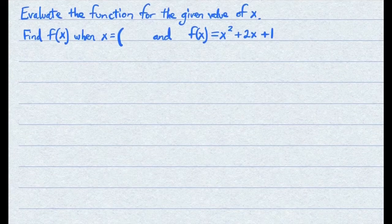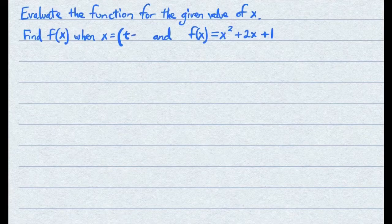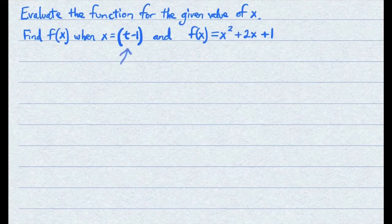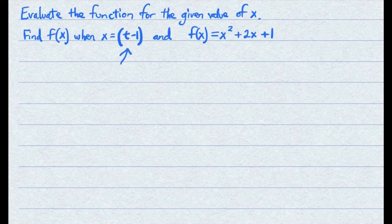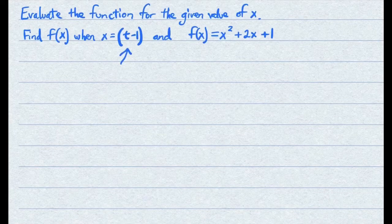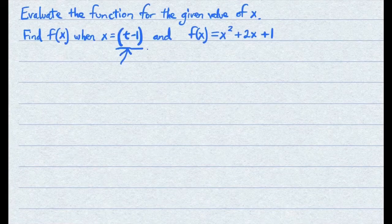Continuing from the last video, what if instead of a pure number you get a variable like this? t minus 1. Basically, you still follow the same process. Everything in the parentheses here, t minus 1, is going to replace every instance of x.